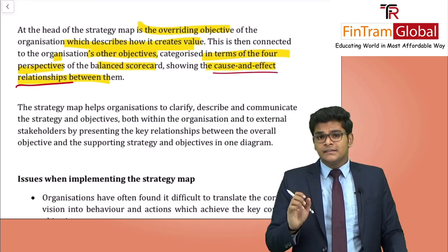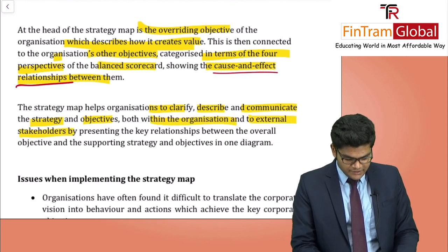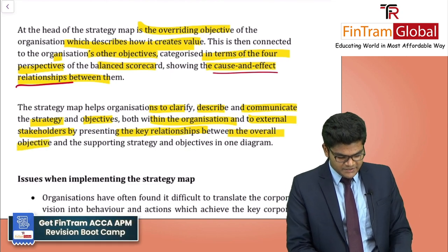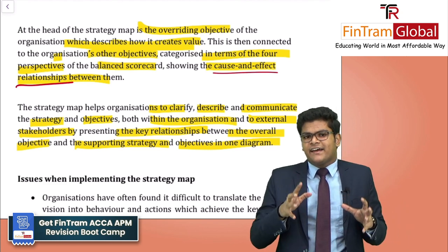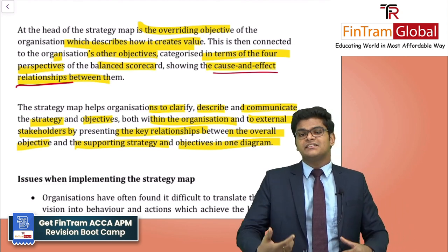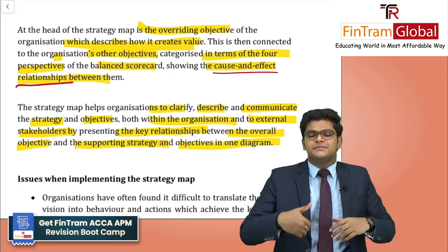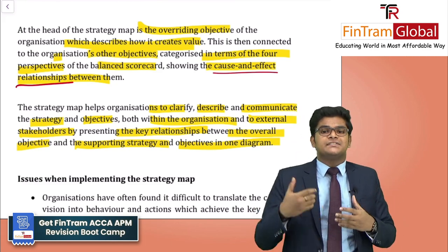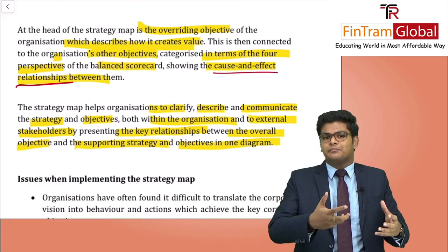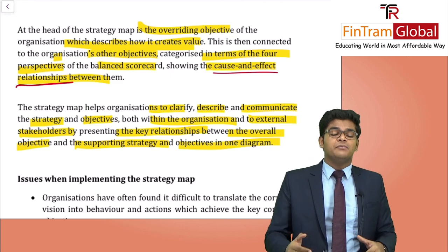The strategy map helps organisations clarify, describe, and communicate the strategy and objectives both within the organisation and to external stakeholders, by presenting the key relationship between the overall objective and the supporting strategies in one diagram. In a single diagram we can communicate the purpose of the organisation and why they conduct the activities they do — efficiently conveying this to management, employees, and external stakeholders.